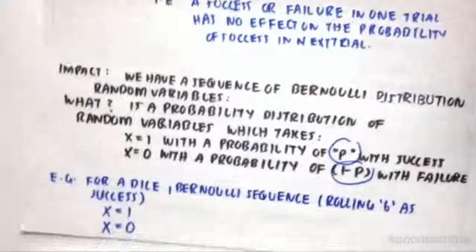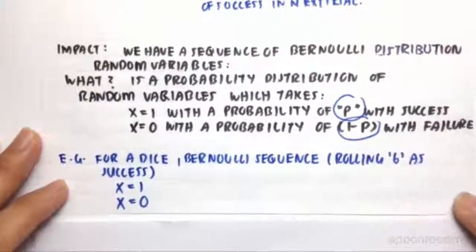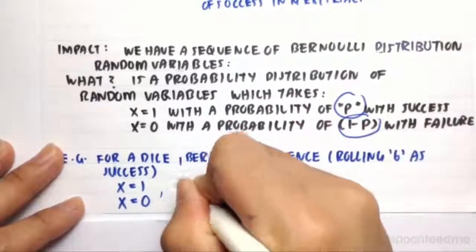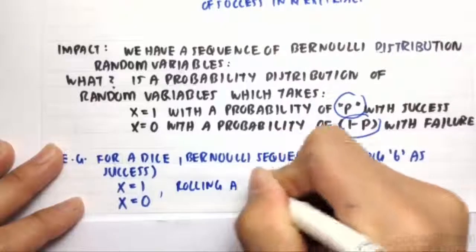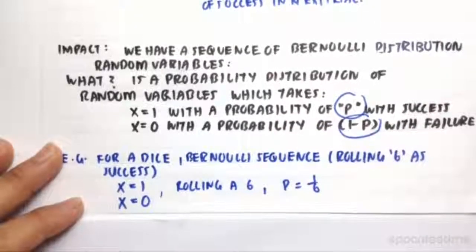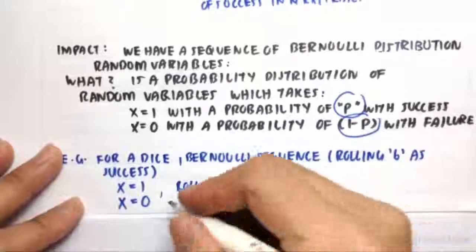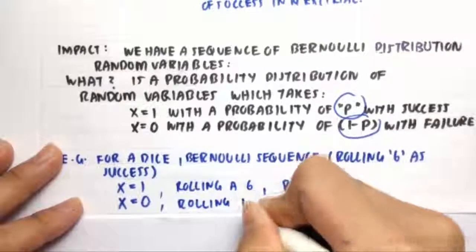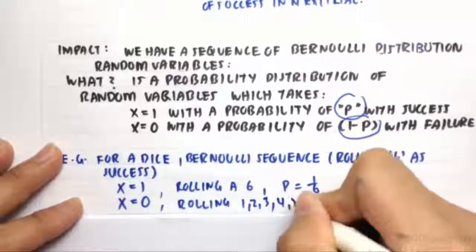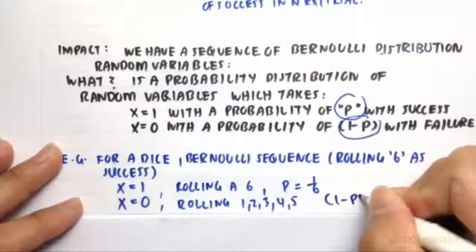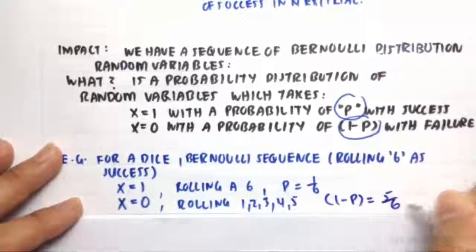For example, if we roll a dice, the Bernoulli sequence for rolling a 6 would be x equals 1 for rolling a 6, which is success with P equals 1 in 6. Then x equals 0 for rolling a 1, 2, 3, 4, or 5 - anything other than a 6 - with a probability of 1 minus P, which would be 5 in 6.